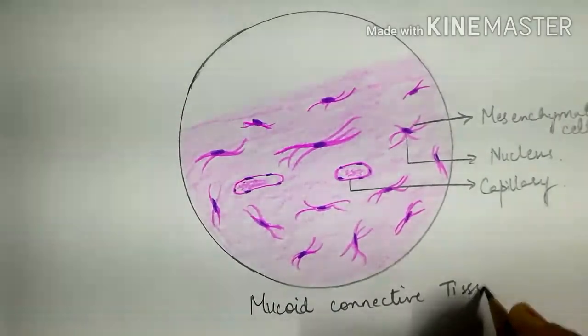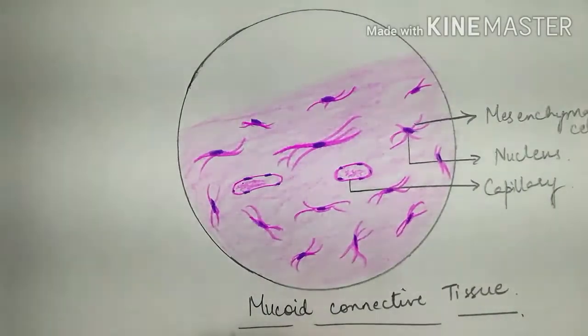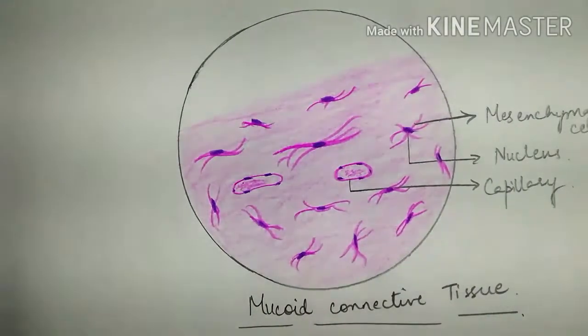Examples of mucoid type of connective tissue, which is Wharton's jelly of umbilical cord. Thank you.